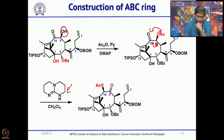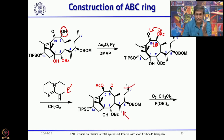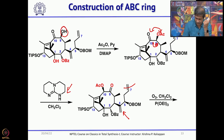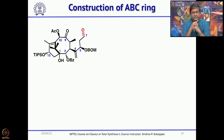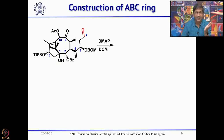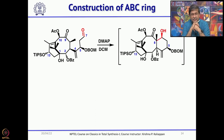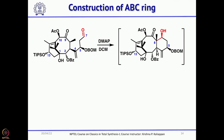Now, you need to cleave the terminal double bond selectively in the presence of the disubstituted double bond. That can be done by ozonolysis followed by treatment with triethyl phosphite — or you can use dimethyl sulfide or zinc — to give the corresponding aldehyde. Once you have the ketone and aldehyde, treatment with DMAP leads to intramolecular aldol reaction to construct the C ring. The C ring is constructed and the two chiral centers are also fixed.